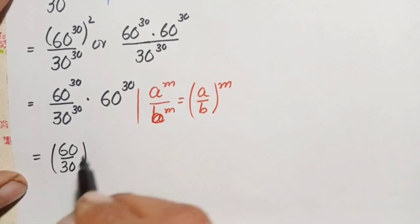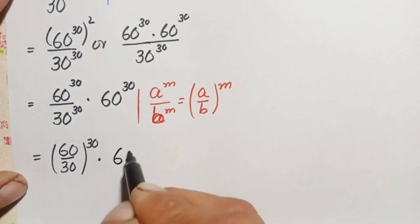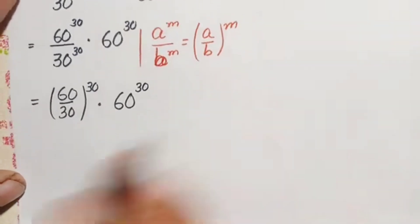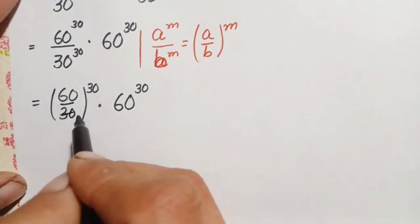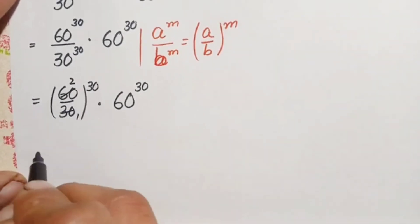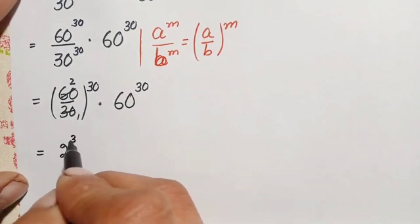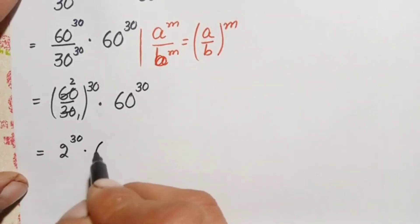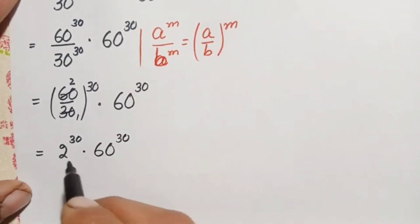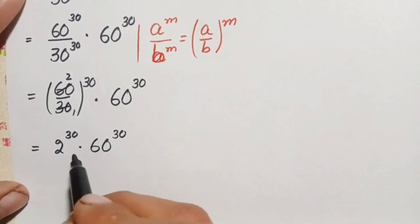This gives us 2 raised to power 30, times 60 raised to power 30. Simplifying: 60 divided by 30 equals 2, so the first fraction becomes 2 raised to power 30. The full expression is now 2 raised to power 30 times 60 raised to power 30.